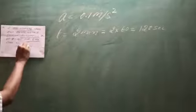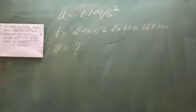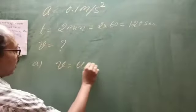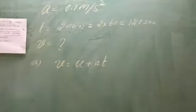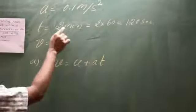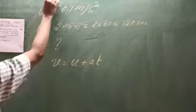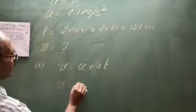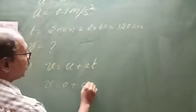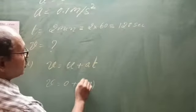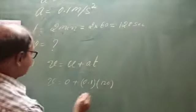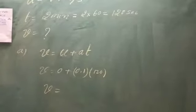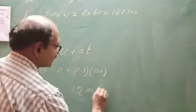We are going to find out the speed in meters per second. The formula we use is V is equal to U plus AT. Acceleration is there, time is there, and U is considered as 0 since it starts from rest. Therefore, V is equal to 0 plus 0.1 into 120 seconds. So V is equal to 12 meters per second.